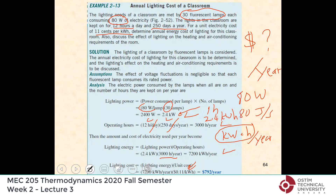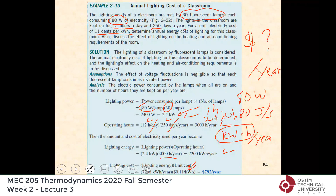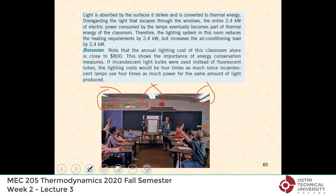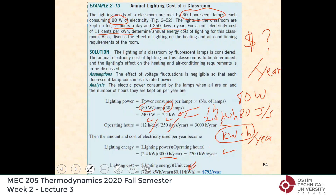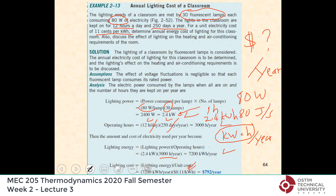Seven hundred ninety-two dollars a year is not a small amount, and these are reasonable values for a large classroom running 250 days a year. In winter, the lights help heat the room since all the energy is converted to heat. But in summer, the air conditioner must remove that same energy — so lighting increases air conditioning cost but reduces heating cost.